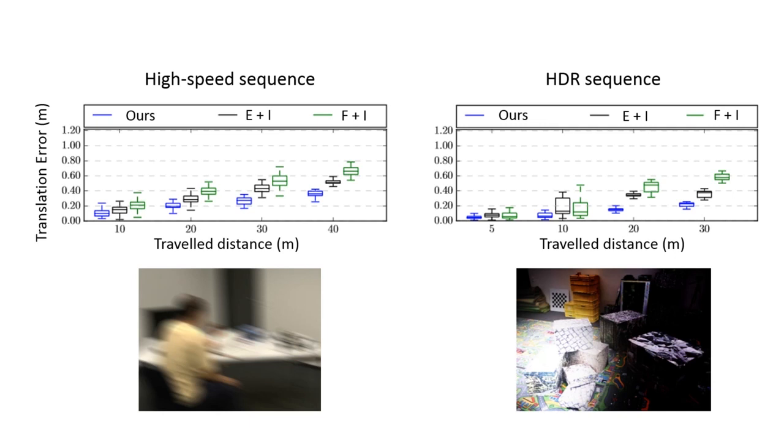Our pipeline, in blue, has consistently lower errors, showing it can successfully fuse events, frames, and IMU. On average, using events provided a boost of accuracy of 85% over a frame-based approach only.